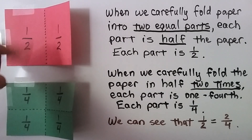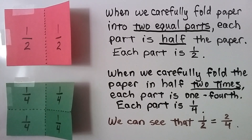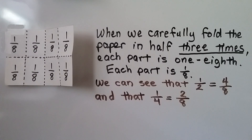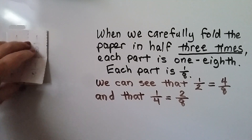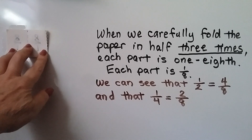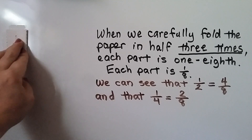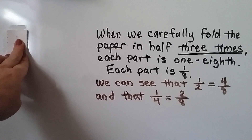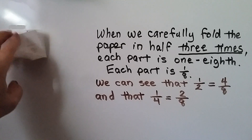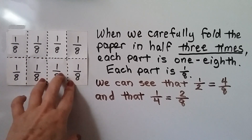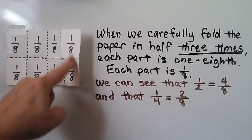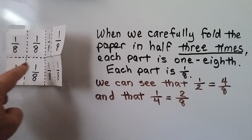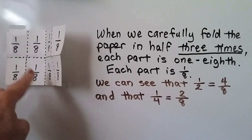We can see that a half is equal to two-fourths. When we carefully fold the paper in half three times — the first time, the second time, and then folding it in half again, that's three times we folded the paper in half — each part is one eighth. And we can see that half is equal to four-eighths, and that one fourth is equal to two-eighths.